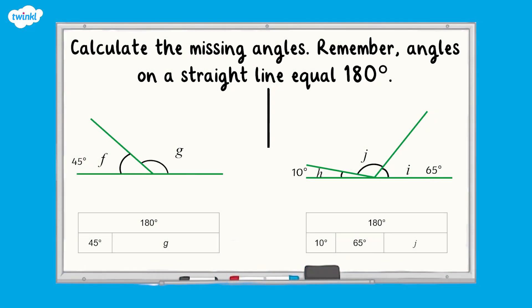Now it's your turn. Use the fact that angles on a straight line equal 180 degrees to calculate the values of the angles marked. You could use a bar model to help you to calculate. Pause here and have a go.